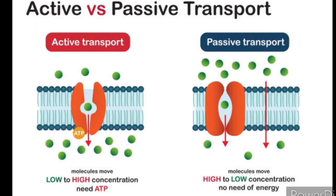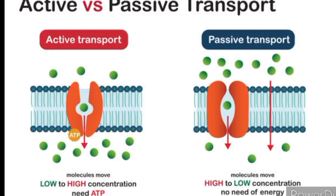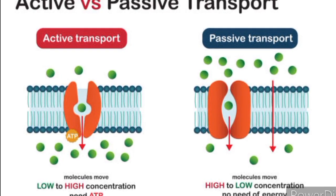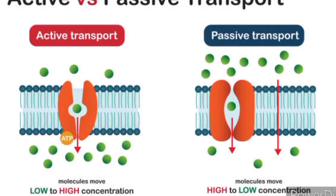Active transport requires energy, usually ATP, to move substances against their concentration gradient, often facilitated by specific protein pumps or carriers.